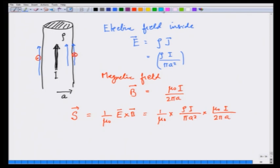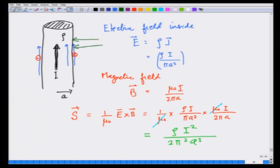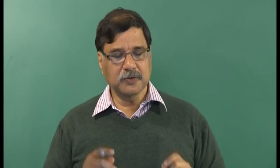Canceling terms, the μ₀ cancels, and you end up getting S = ρI² / (2π²a³). The direction of the Poynting vector is into the volume, as you can easily verify by taking E × B. So we have this energy flowing into the volume of this wire. There are also surface charges that give an E field perpendicular to the wire making energy flow along the wire, but that goes beyond what we want to show here.